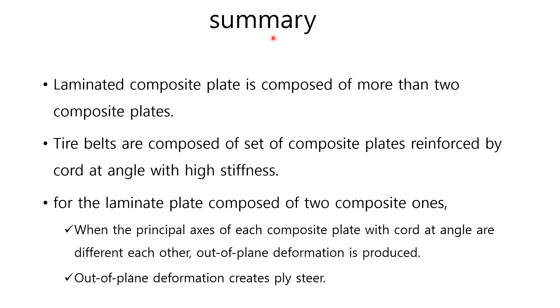Here we have summary. Laminated composite plate is composed of more than two composite plates. Tire belts are composed of a set of composite plates reinforced by cord at angle with high stiffness. Further, laminated plates composed of two composite plates. For instance, when the principal axes of each composite plate with cord at angle are different to each other, out-of-plane deformation is produced. Out-of-plane deformation creates Plysteer.